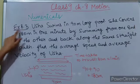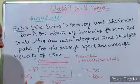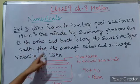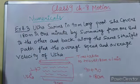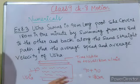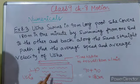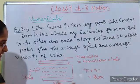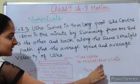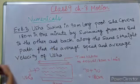Now let's do example 8.3. Usha swims in a 90-meter long pool. She covers 180 meters in one minute by swimming from one end to the other and back along the same straight path. We need to find the average speed and average velocity of Usha. The pool is 90 meters, so going one way is 90 meters and coming back is another 90 meters, giving a total distance of 180 meters.